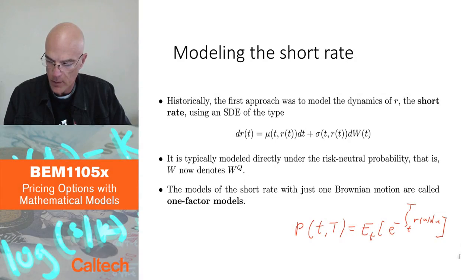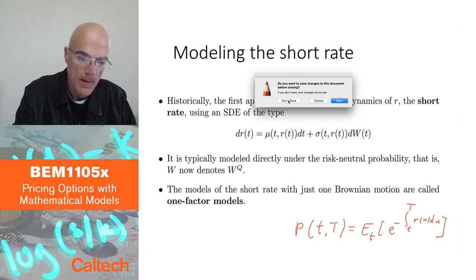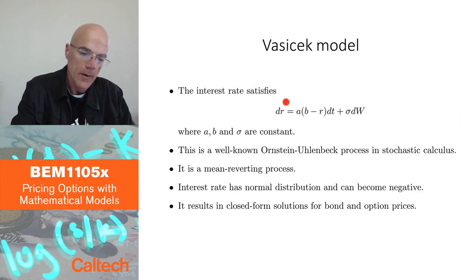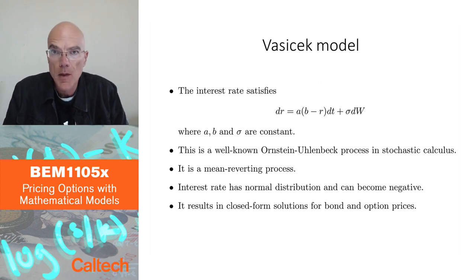Well, let's look at what kind of models for the short rate we have. The first one, by far the first, was the Vasicek model. Vasicek suggested this model in the 70s, I think 76 or something like that, so a few years after Black Scholes, and it's still a popular model.